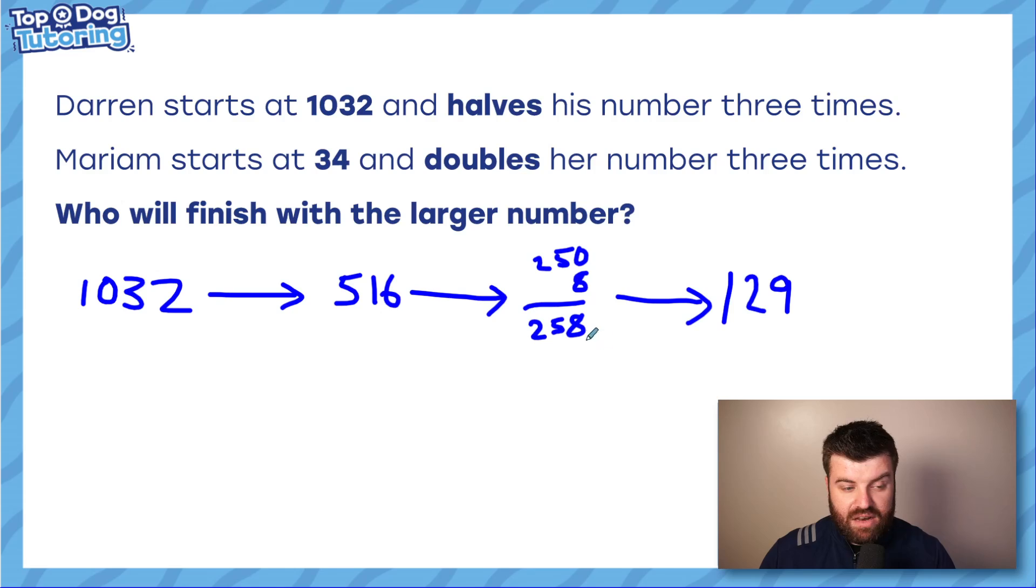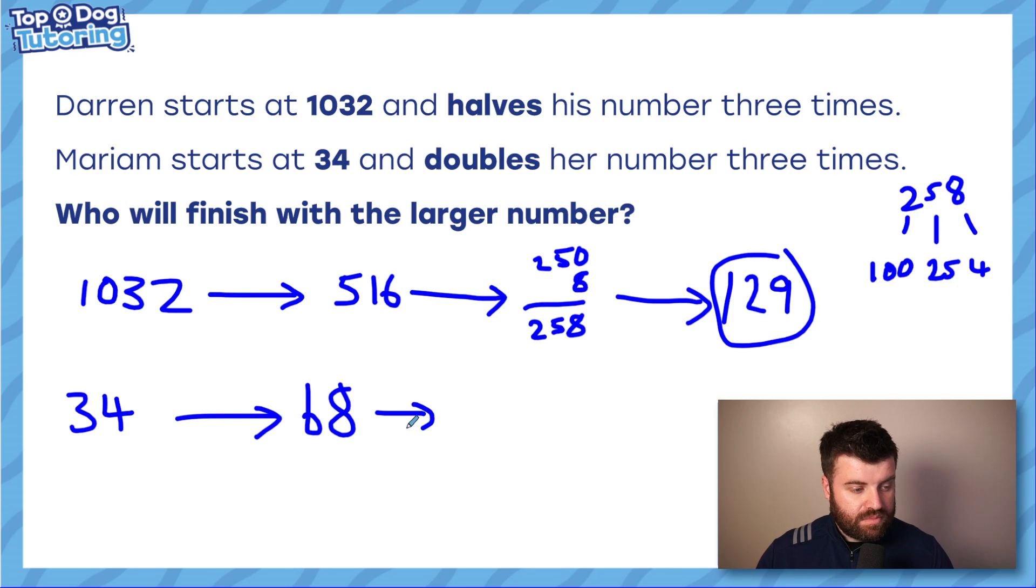Halving 258. Half of 250 is 125. Half of 8 is 4. So I can do it that way. You do it however you want. We're going to end up with 129. So 129. Again, however you want to do this, you can do it. You could write it down like this. 258. And you might think half of 8 is 4. Half of 50 is 25. Half of 200 is 100. However you want to do this, you're going to end up with 129. Now let's see what Mariam ends up on. 34. She's going to double it three times. People tend to find doubling easier. Let's see. Double 34. So double the 30, double the 4. We end up with 68. Let's double the 68. We end up with 120, double 60 and 16. So 16 plus 120 gets us to 136. Look at this. We are already on a larger number. So we can stop there. Whatever we double here is going to end up being more than 129. So the answer was Mariam. She ends up on a much bigger number.